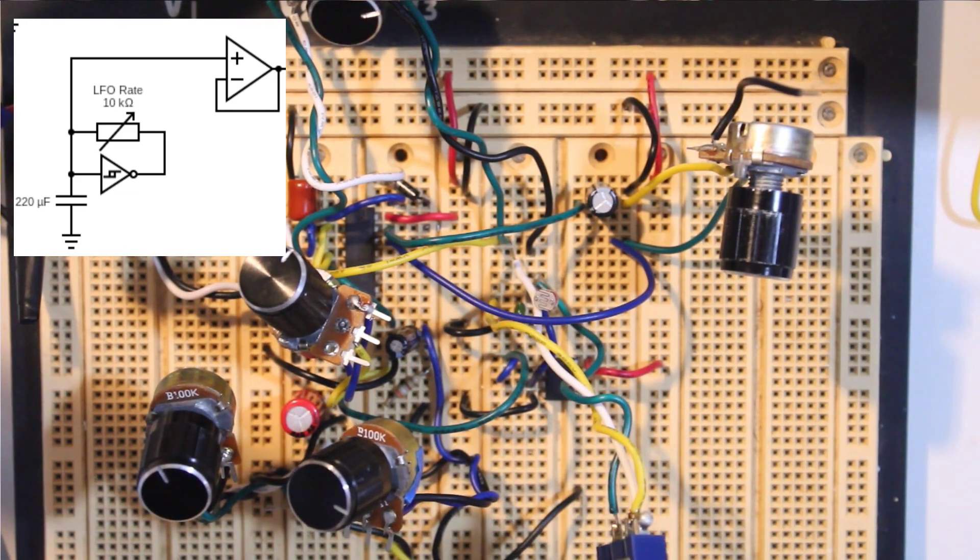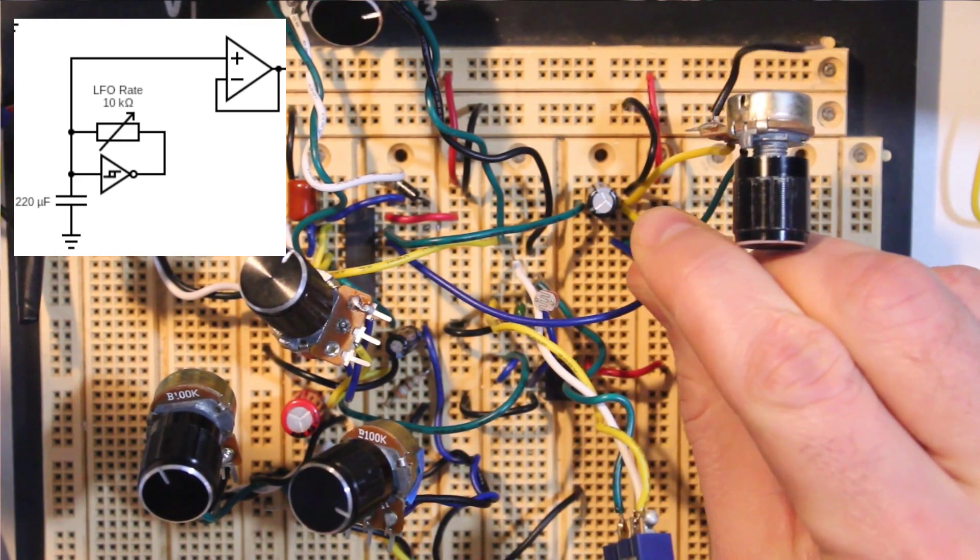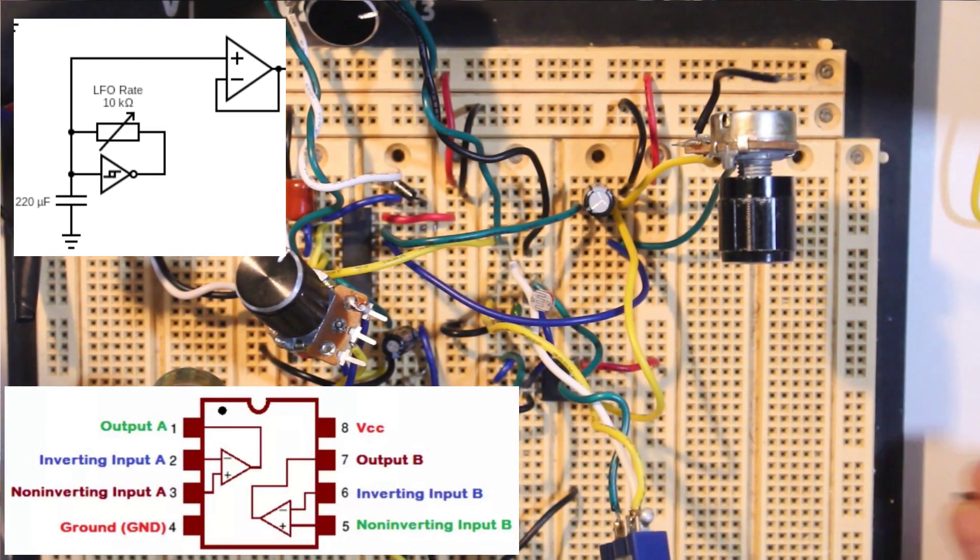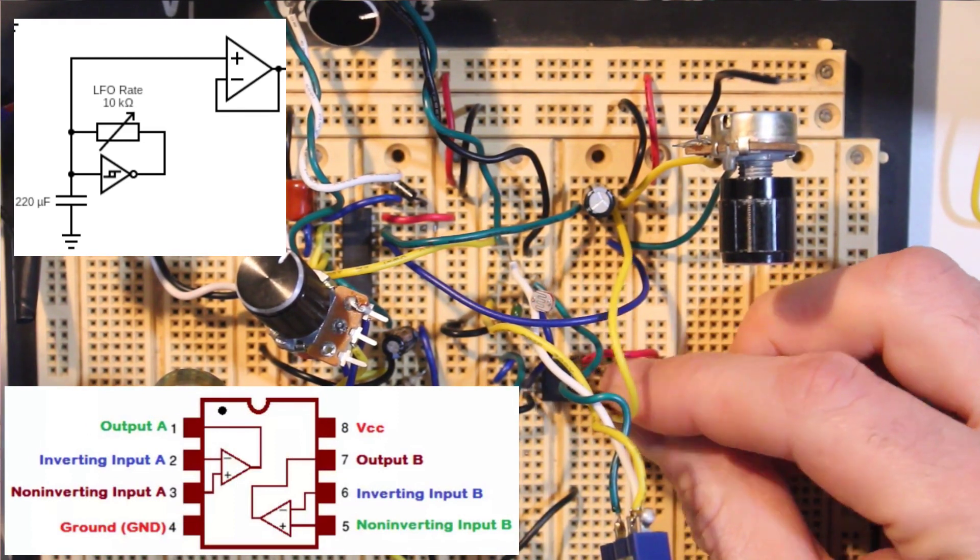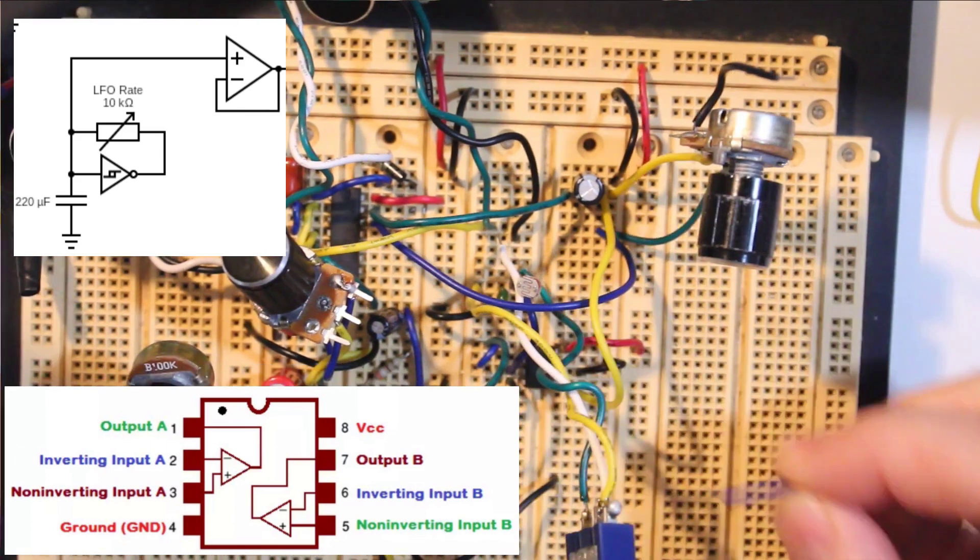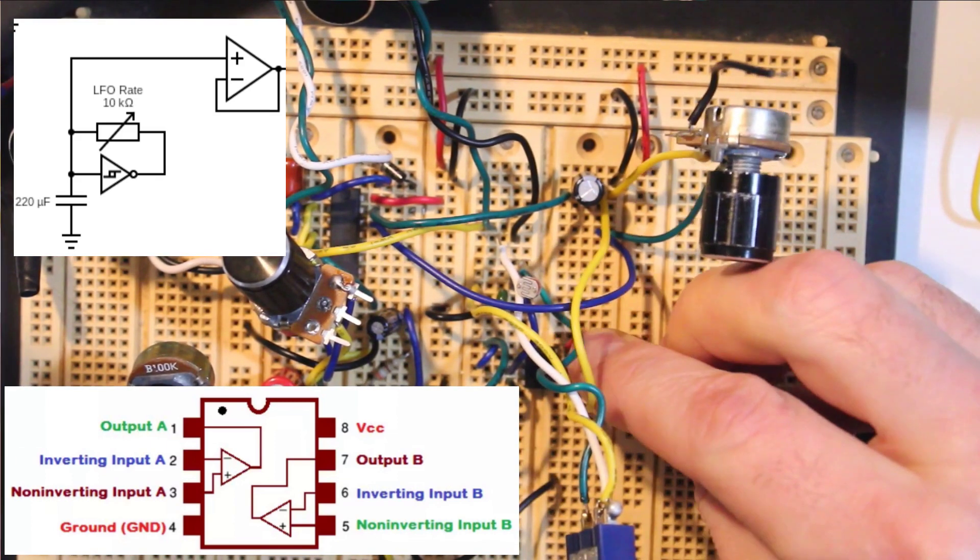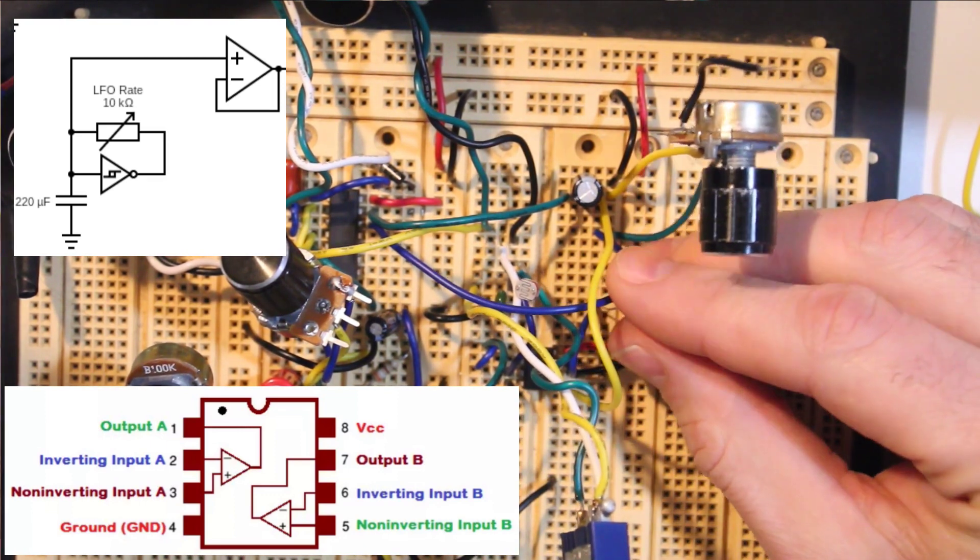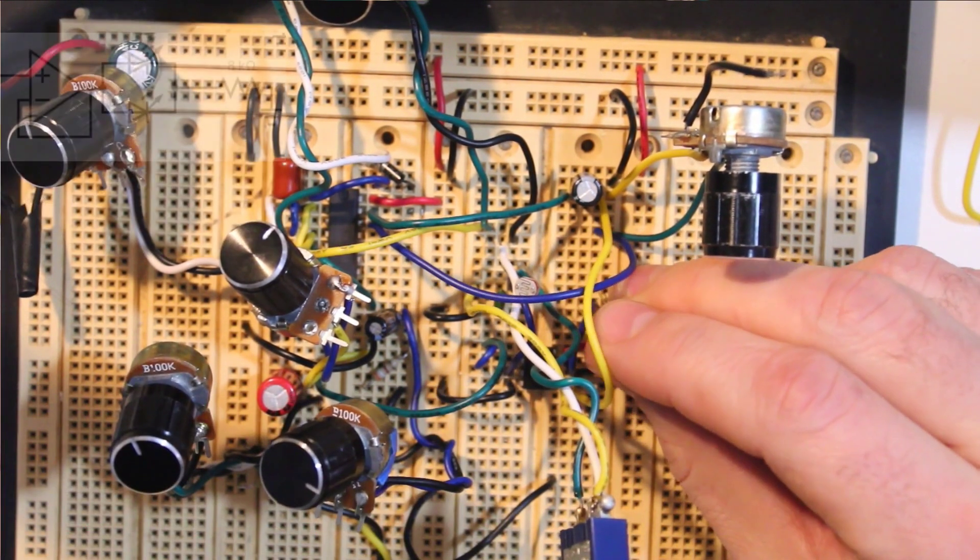Now let's jump from the positive leg of the capacitor down to a non-inverting input on a fresh op-amp. Finish setting up the voltage follower by adding a small jumper from the inverting input to the output of the op-amp. This is going to buffer our signal and send a triangle wave out to a pair of LEDs that are wired up in parallel.